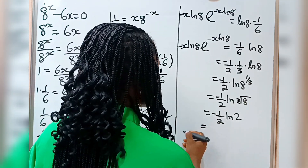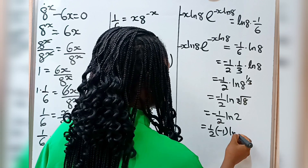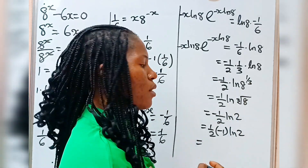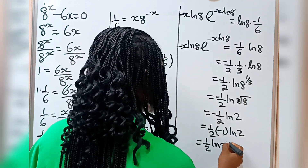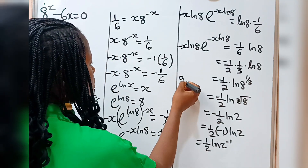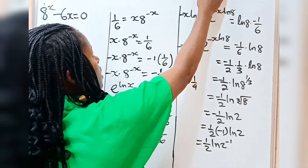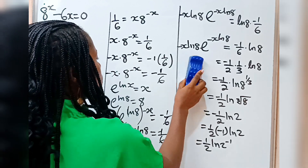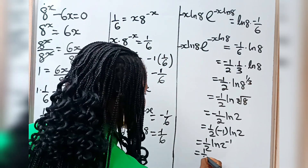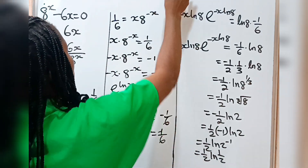So this is equal to 1 over 2 multiplied by minus 1 times ln 2. Now minus 1 can also go up to give us 1 over 2 times ln of 2 to the power of minus 1. Recall that a to the power of minus 1 is equal to 1 over a. So that means this becomes 1 over 2 times ln of 1 over 2. So this is what we have at this point.